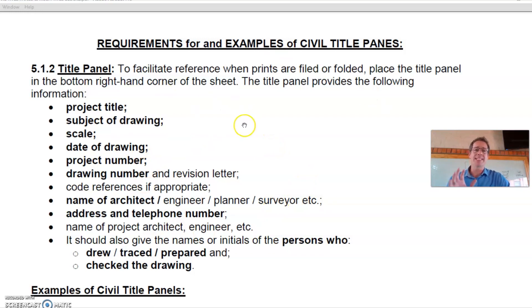Here are the requirements as stated by SABS for a civil title panel. I'll also have it in the download link below. The purpose of a title panel is to have a summary of who that drawing is intended for, who made the drawing, and what we have on that actual drawing. It's always going to be on the bottom right-hand side of a drawing for ease of reference.